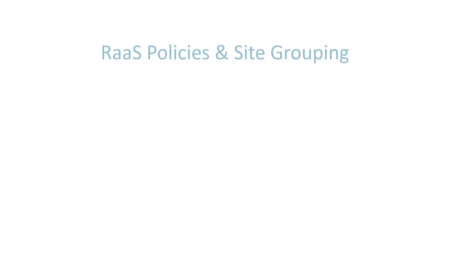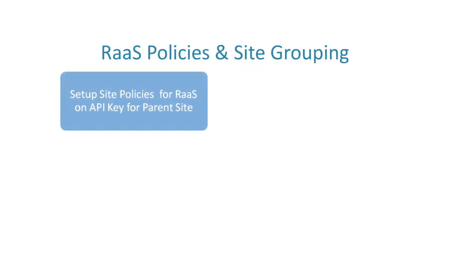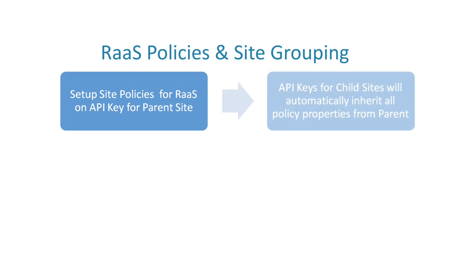When using RAS with Site Grouping, the Site Policy should be configured on the parent API key and will automatically be inherited by the child API keys. This means that all API keys within a Site Group share the same set of RAS policies.